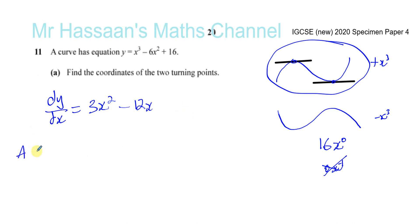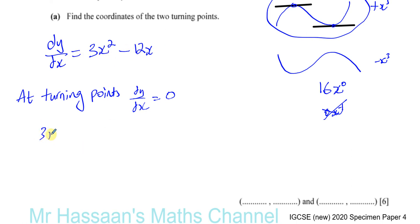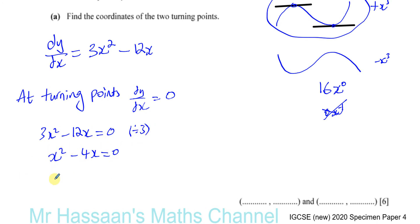We know at the turning points, the gradient dy/dx is equal to zero. To find the x-coordinates of the turning points, we equate this to zero: 3x squared minus 12x equals zero. We can divide both sides by three to get x squared minus 4x equals zero. We don't divide by 3x because one of our solutions is in there — we take it out as a factor. Factorising: x times (x minus 4) equals zero. So either x equals zero or x equals four — those are the x-coordinates of the turning points.